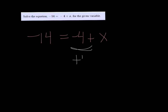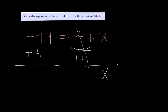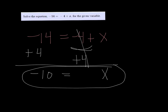So if I add 4 to both sides, negative 4 plus 4 is just 0. All I'm left with is an x on the right, and negative 14 plus 4 is negative 10. So x is equal to negative 10.